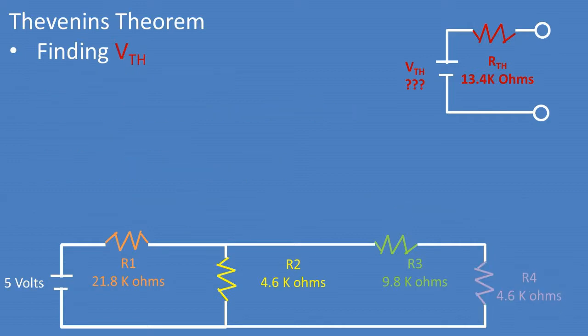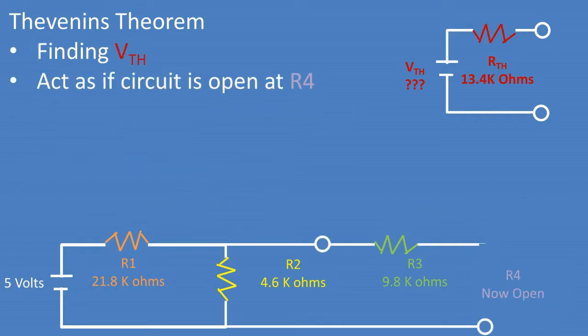Now let's solve for the voltage of the Thevenin circuit. We will need to act as if the circuit is open at resistor 4. We want to find the voltage between the two nodes. We place the node before resistor 3 because it is not connected and will not have a voltage. So we really want to find the voltage of resistor 2 in this case.